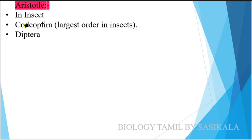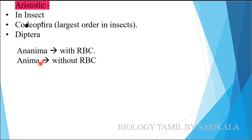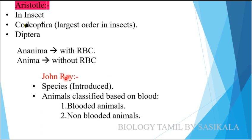Aristotle classified animals with or without blood. The two names are Enaima and Anaima. Enaima is animals with RBC (red blood). Anaima is animals without RBC. John Ray introduced the concept of species and some related terms.